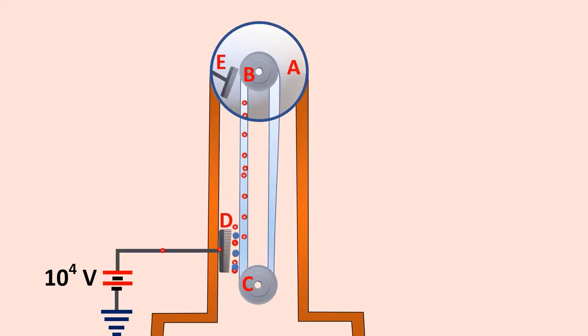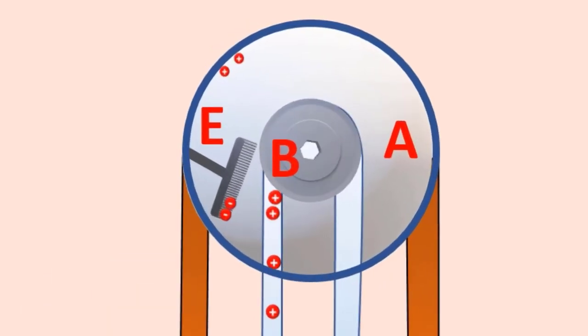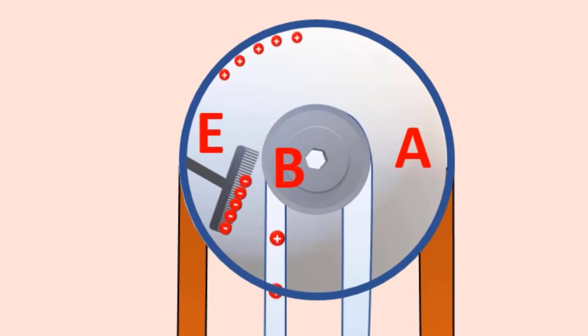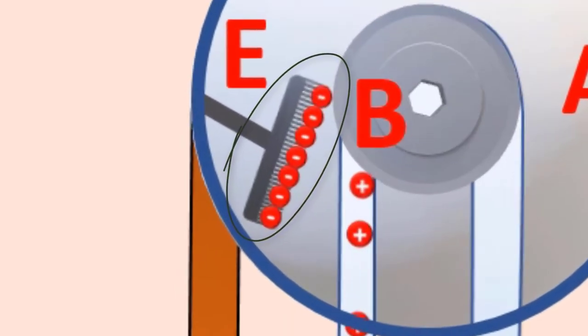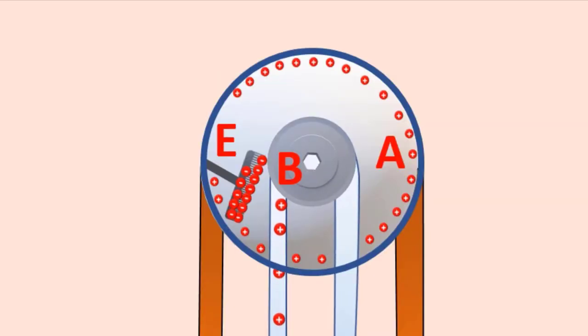When the positive charges reach the comb E, because of electrostatic induction, comb E acquires negative charge and the sphere acquires positive charge. The acquired positive charges are distributed on the outer surface of the hollow sphere. At the same time, the negative charges produced due to corona discharge nullify the positive charges in the belt before it passes over the pulley.